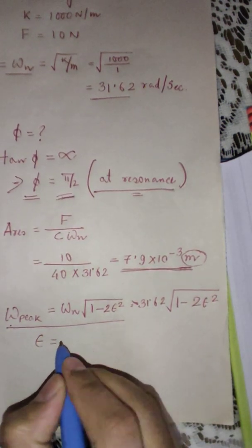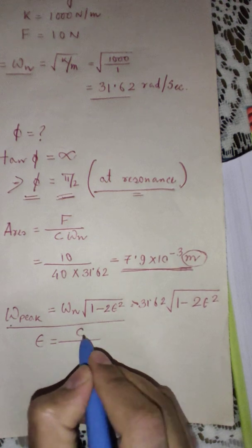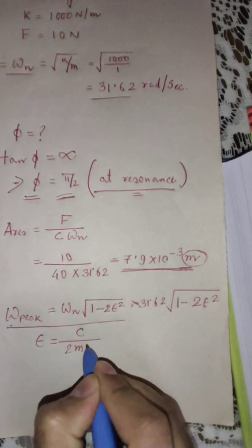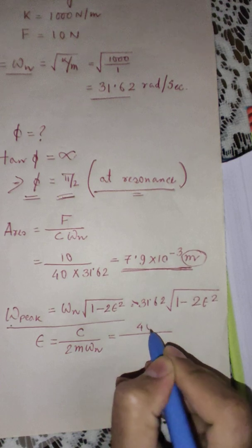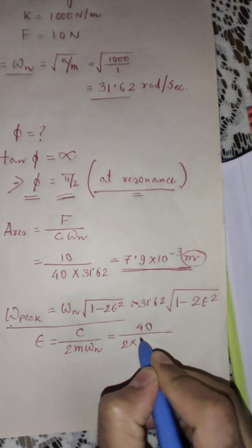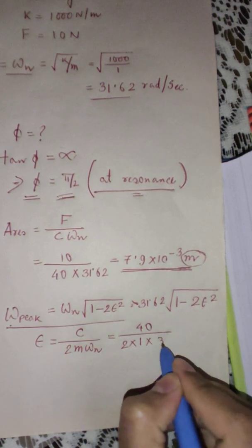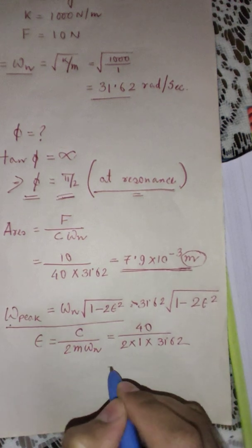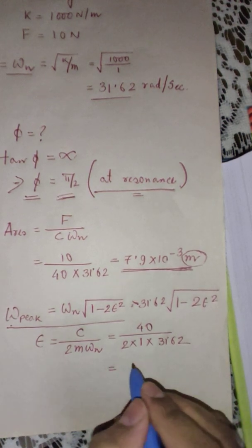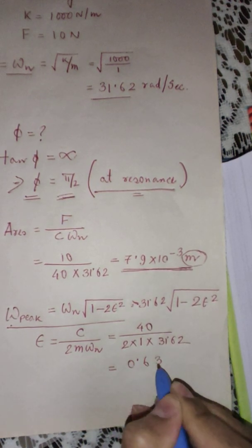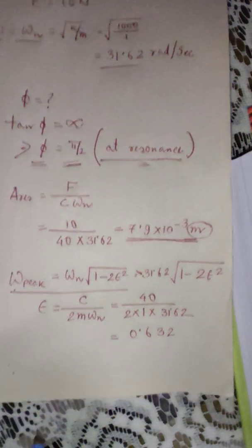This gives us 31.62 into square root of 1 minus 2 into epsilon square. What is the value of epsilon? We need to calculate the value of epsilon as epsilon is equal to C by 2 m omega n. So here it is 40, 2 into mass is 1 kg, omega n is 31.62.